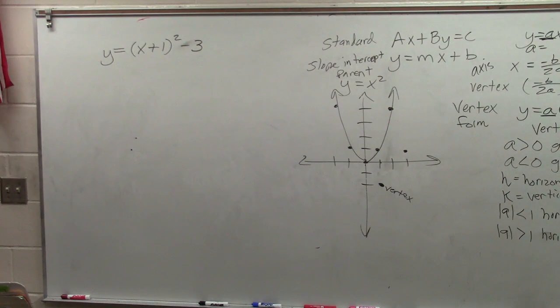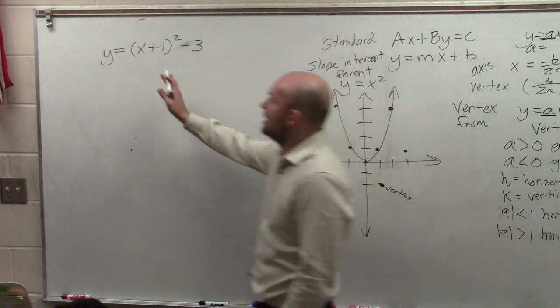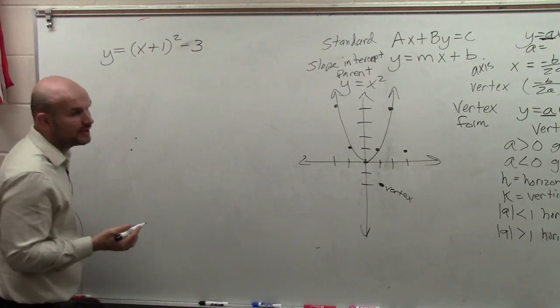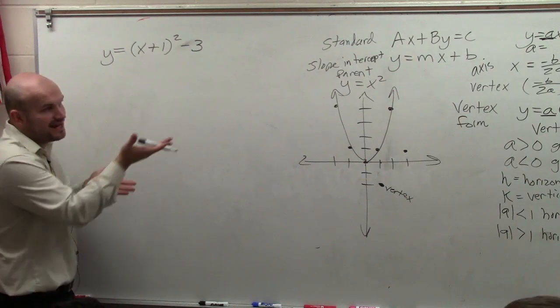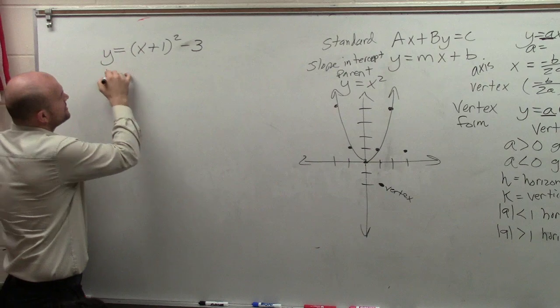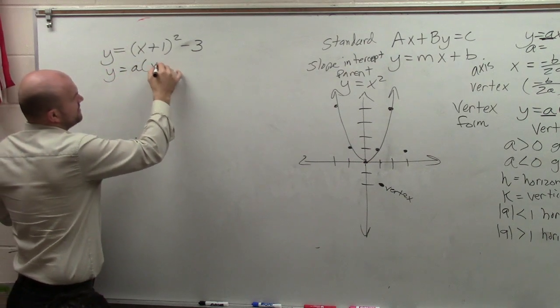So ladies and gentlemen, let's go and take a look at this example here. Here I have y equals x plus 1 squared minus 3. Now the first thing we want to do is, kind of like what we did for standard form, is make sure we understand what our vertex is going to be.